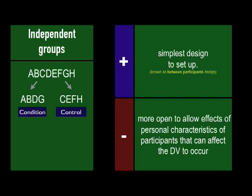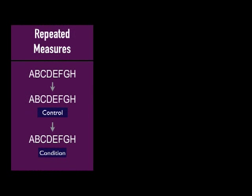So in order to counter that, we have the next way of dealing, the next experimental design, which is the repeated measures, where all participants go through the control experience and then they go through the condition or the treatment experience or the experimental group.